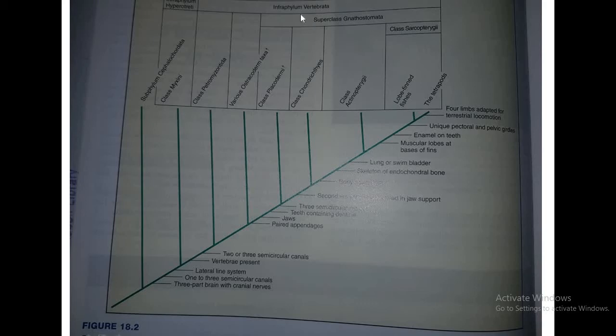Gnathostomes include members such as Ostracoderms, Placoderms, Chondrichthyes, Actinopterygii, and then class Sarcopterygii, which are the lobe-finned fishes.